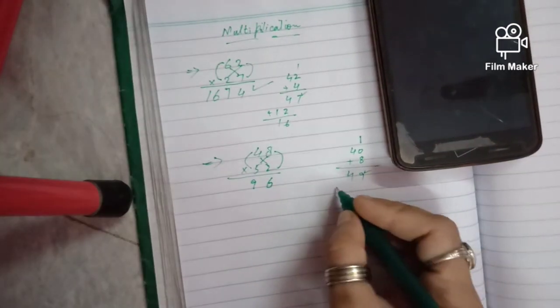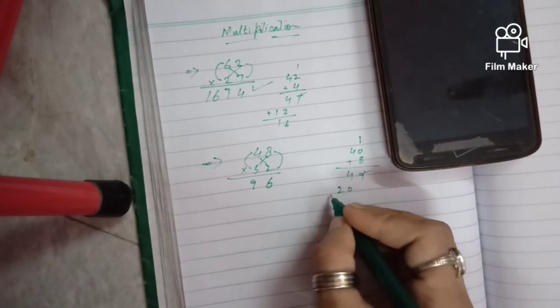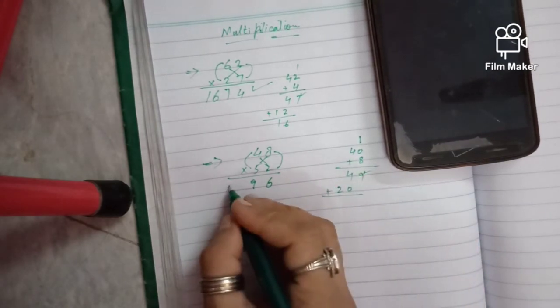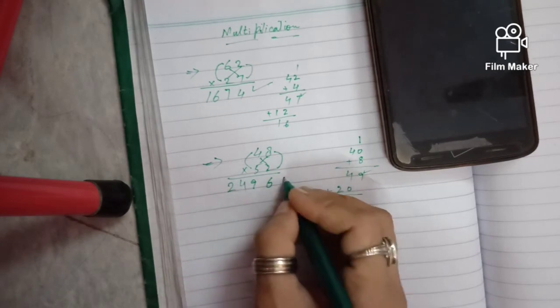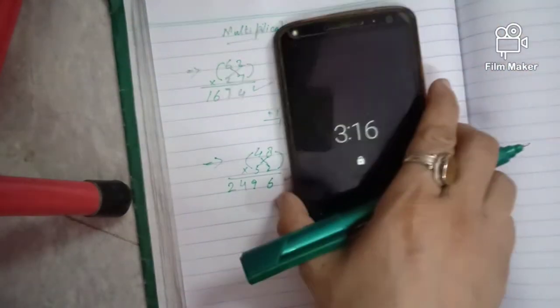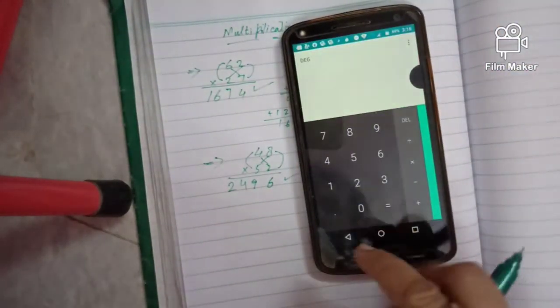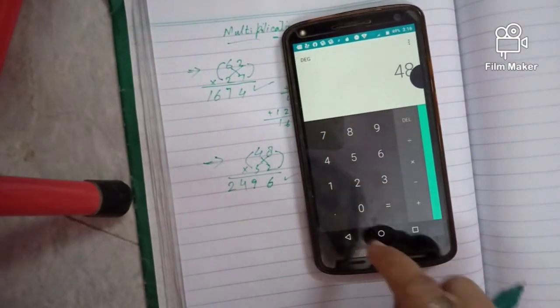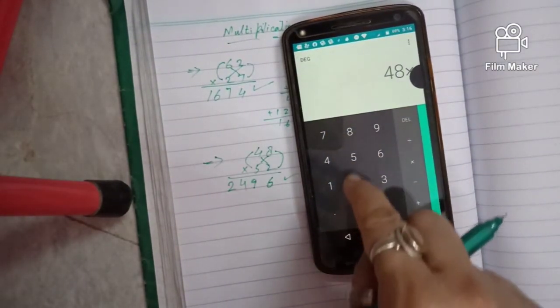20 plus 4 is 24. We have the answer. Now let's check in the calculator. 48 times 52.